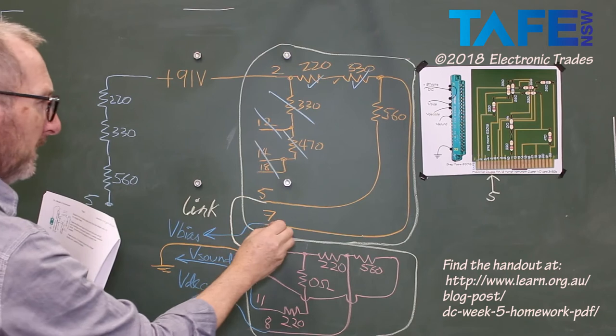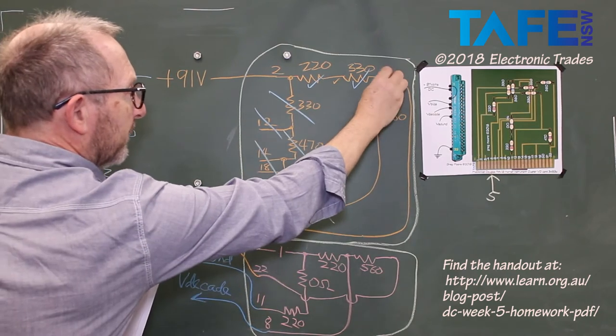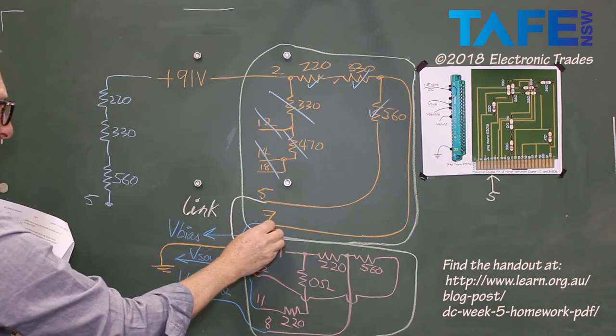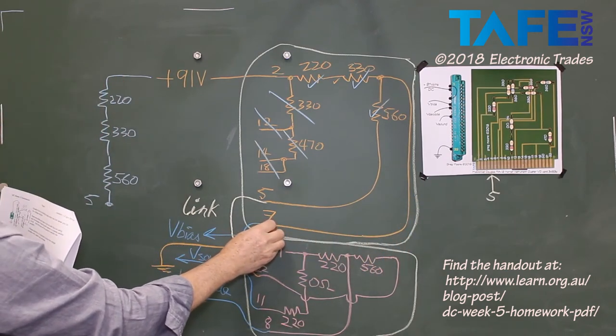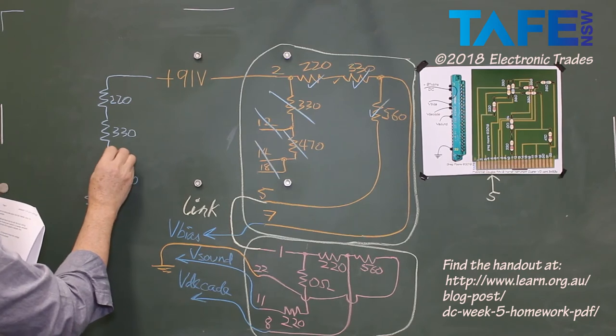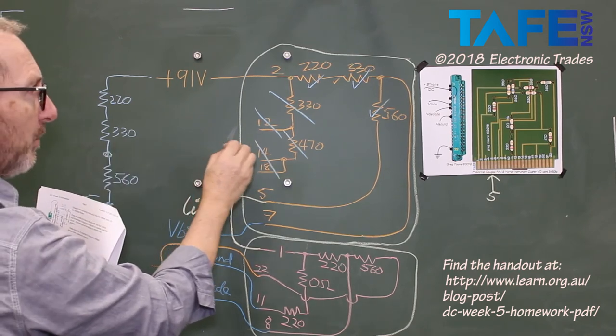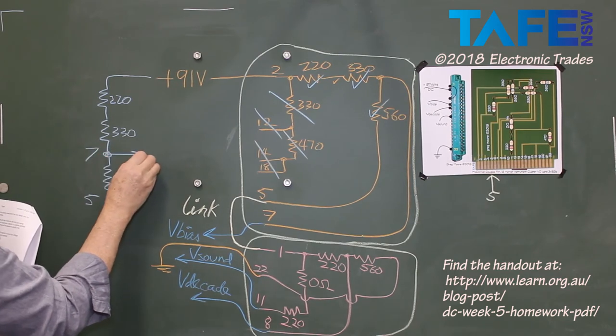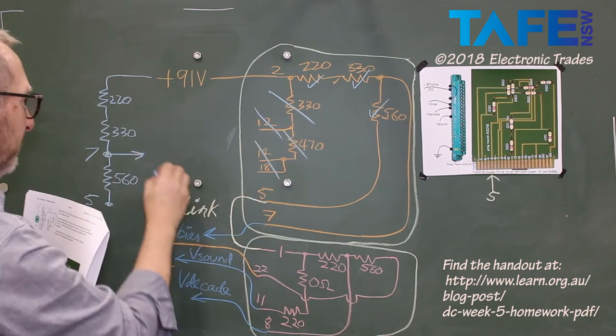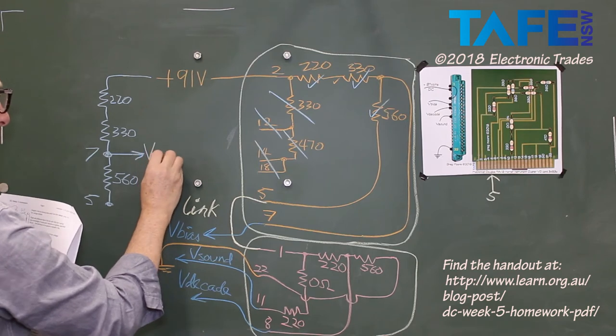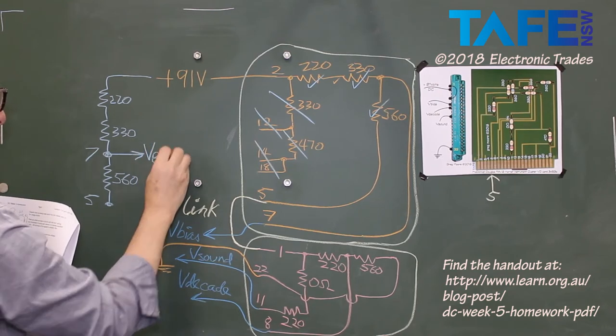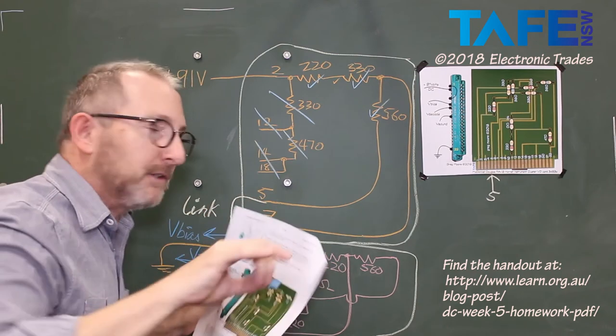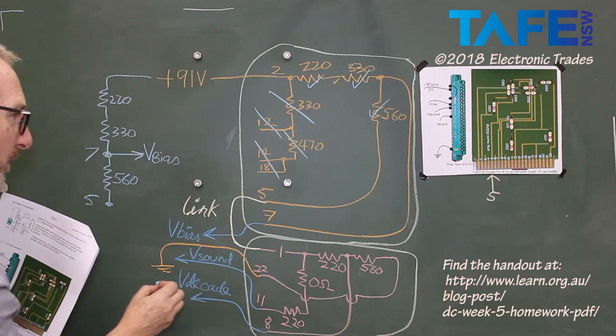Pin 5. Also, from that point there, comes along to pin 7. So, where the 330 joins the 560, that's pin 7. Pin 7 is an output, which is called V-bias. At the end of the 560, pin 5, there's that link that goes across to pin 1.